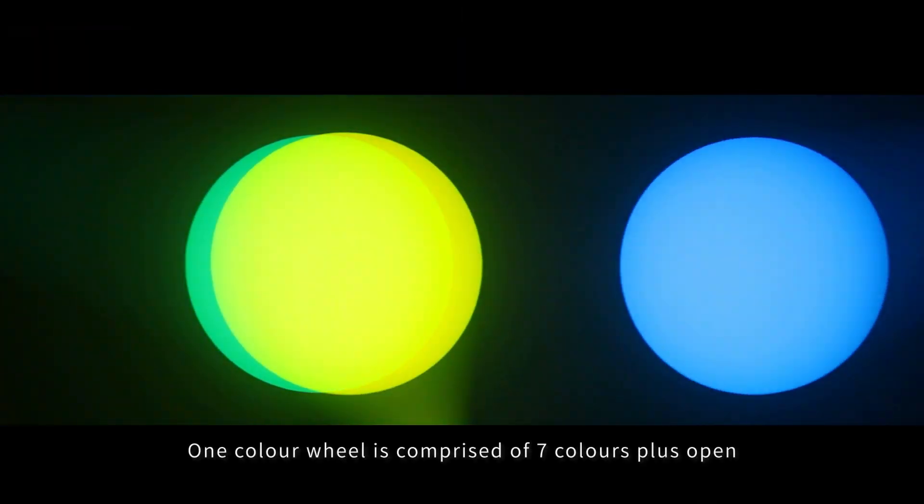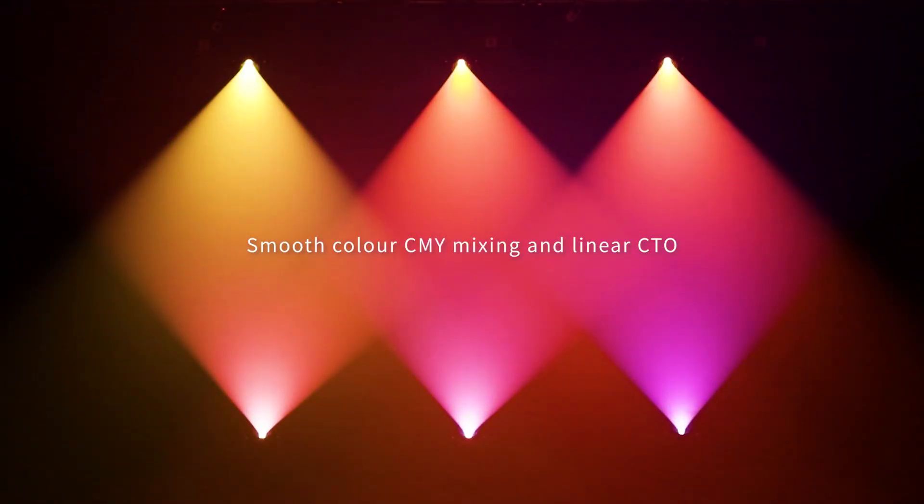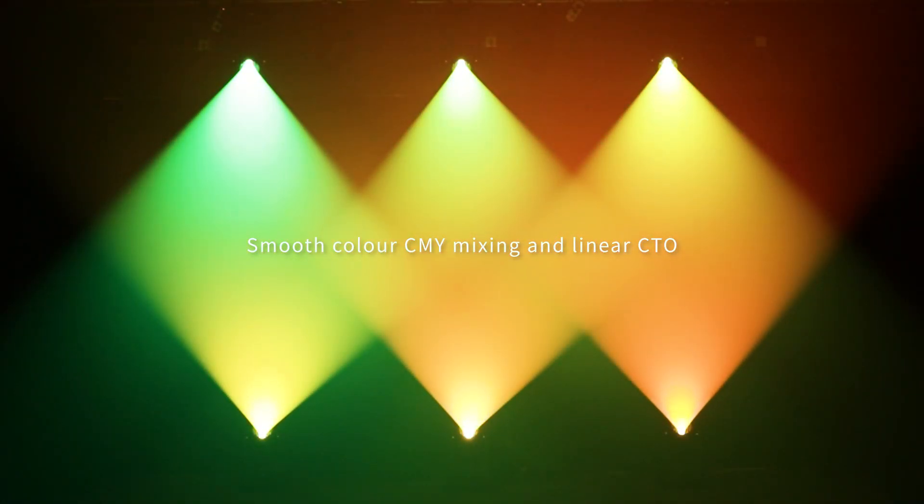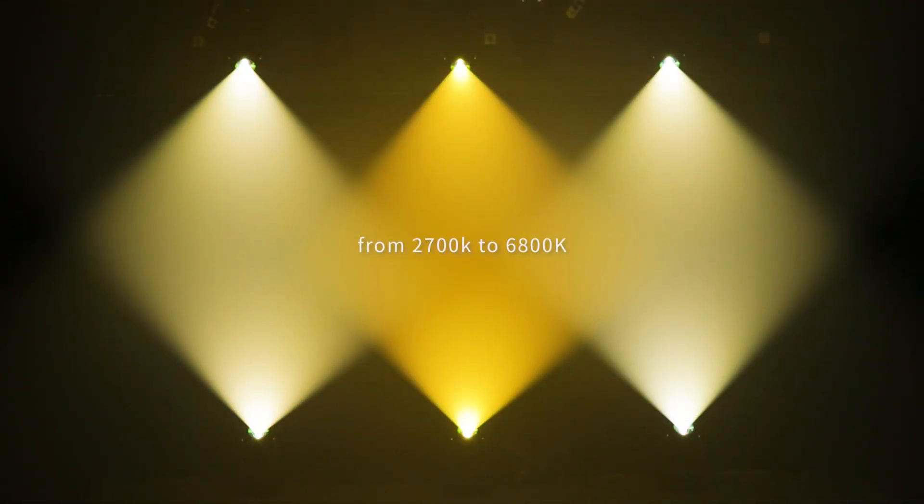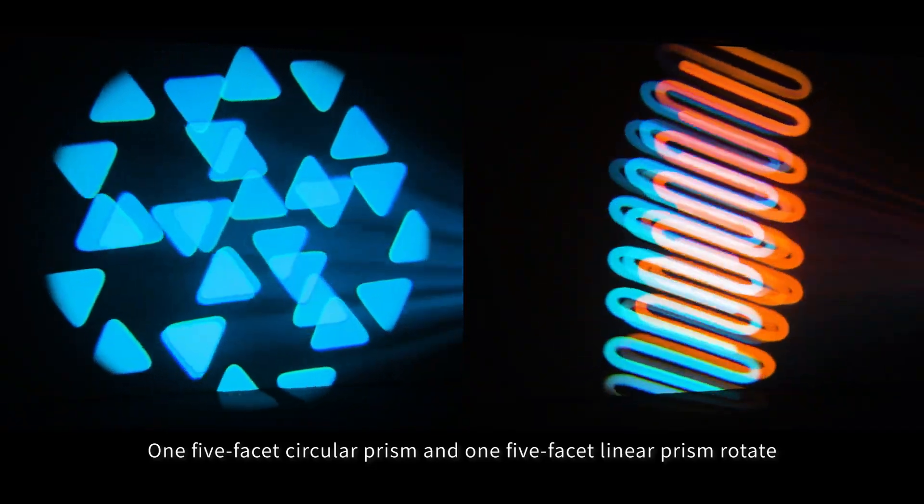One color wheel is comprised of 7 colors plus open. Smooth color CMY mixing and linear CTO from 2700K to 6800K. One 5-facet circular prism and one 5-facet linear prism.